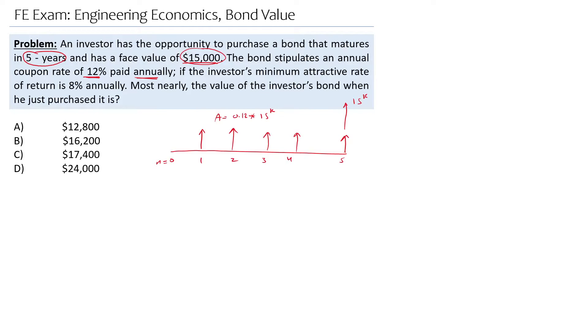The value of the bond is basically the present worth of future cash receipts. In other words, the bond value equals the present worth, which equals the face value multiplied by (P/F, i, n) plus the periodic payments, which is small r multiplied by face value, multiplied by (P/A, i, n).